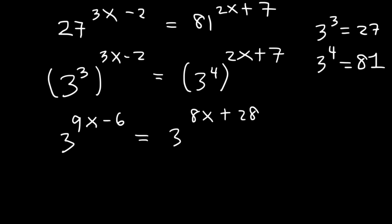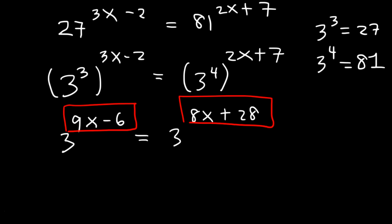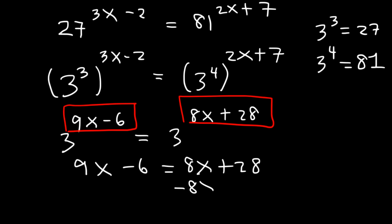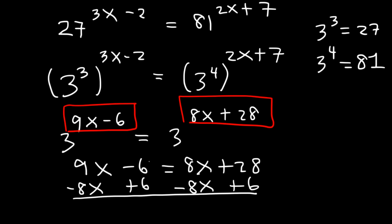Now that we have the same base, we set the exponents equal: 9x minus 6 equals 8x plus 28. Subtracting 8x from both sides and adding 6 gives x equals 34.